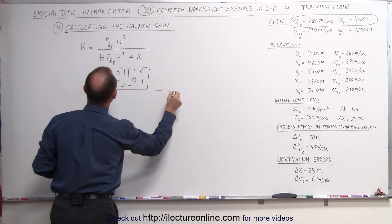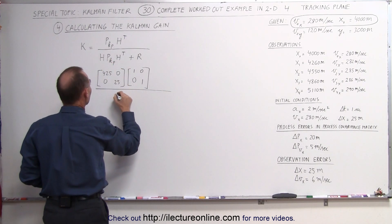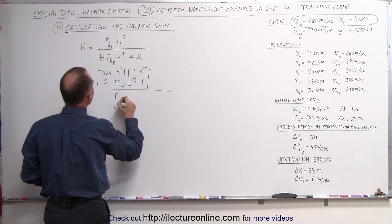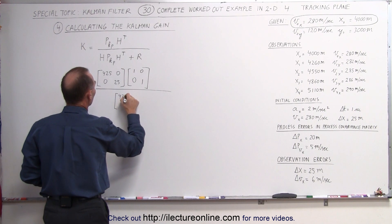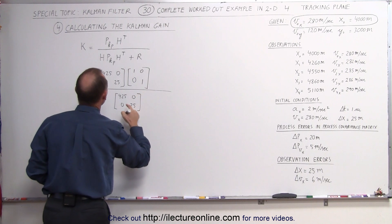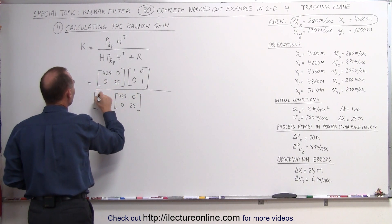Same in the denominator. We have the matrix here, the process covariance matrix that we just calculated, the predicted one. Let's have 425 and 25 on diagonal, 0 and 0, and here the H matrix is going to be 1, 1,